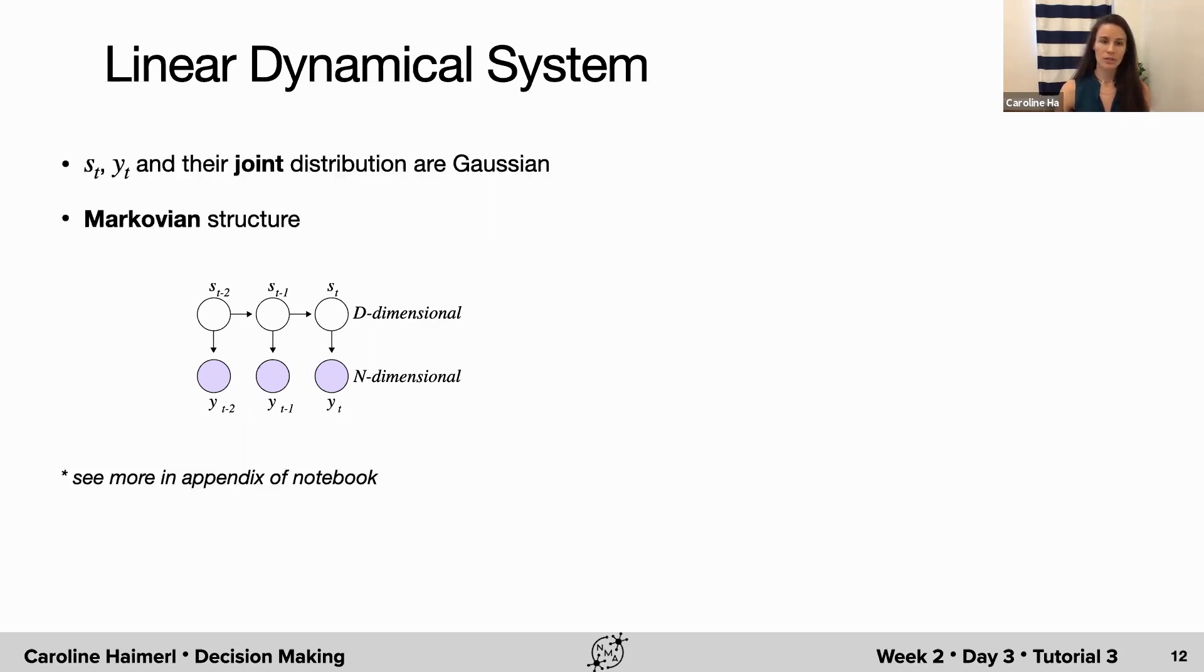There are two important features of linear dynamical systems that make them easy to work with. First, the latent S and the observed Y are both normally distributed. And because the transformation in time between latent states and from latent to observed are linear, their joint distribution is also normally distributed.